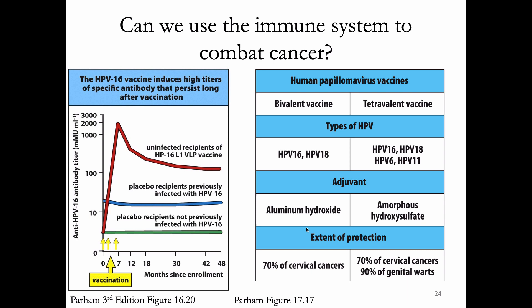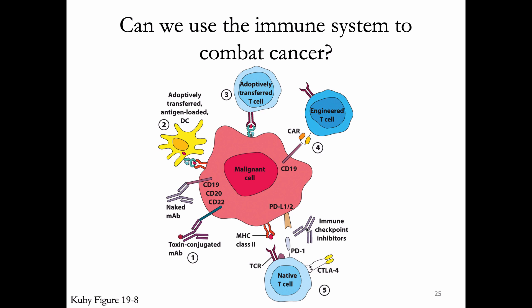We can also think about therapies for other tumor types using the immune system. Even for a patient whose tumor has gotten past immune control, if we put the immune system on steroids — really amplifying the immune response — we can get it to kill that cancer. Your textbook puts together a whole figure showing five ways we use the immune system to combat cancer, and I'm going to go through each of these.